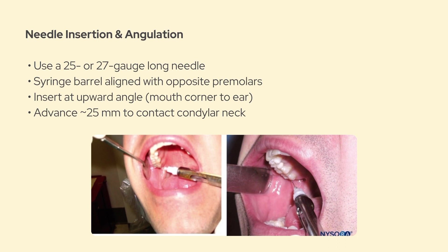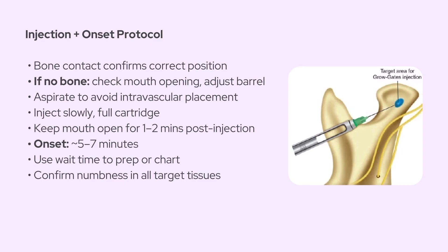As you're advancing the needle, your goal is to contact bone — the neck of the condyle — at around 25 millimeters in depth. Feeling bone is a good thing; it means you're in the right spot and not in the parotid gland. If you don't feel bone, first check that the patient's mouth is still fully open, and you might also need to adjust your barrel a bit more toward the molars to get a better trajectory. Once you hit bone, aspirate to make sure you're not in a vessel, then slowly deposit your anesthetic. After that, have your patient stay upright and keep their mouth open for another couple of minutes, to let the anesthetic really bathe the nerve trunk while it's still in that ideal position.